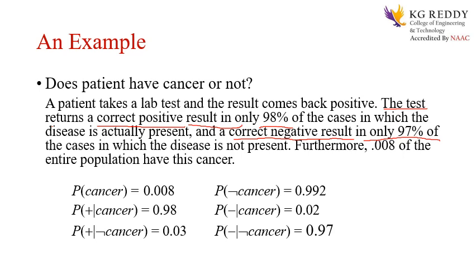Like that, the doctor will take a decision on the basis of their own experience, and sometimes they will take assistance from lab results, because the probability of whether that person is suffering from a specific disease or not — for that reason they suggest us to do the lab tests. One more data present in this example is that out of the total population, only 0.008 — very less probability — is that the patients are suffering from cancer.